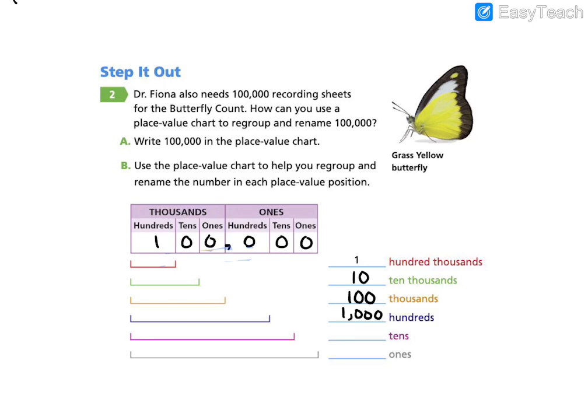And then we'll keep going over to our 10s. How many total 10s are there in 100,000? There are 10,000. And then finally, we regroup and rename using 1s. Well, how many total 1s? If I were to create this number, 100,000 out of little 1s cubes, I would need 100,000 ones.